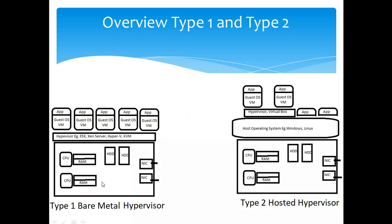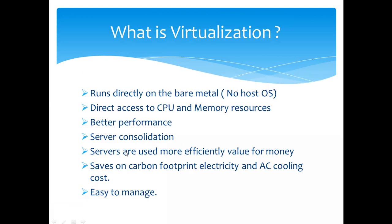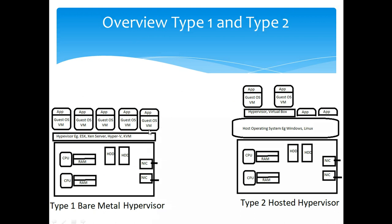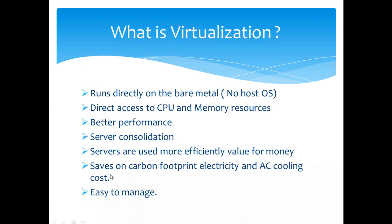Instead of running five physical servers, if you choose to virtualize them you are consolidating five physical servers into one. Servers are used more efficiently, giving better value for money. Because multiple OSes share the CPU and memory, you can utilize up to 80 or 90 percent, compared to buying an expensive physical server and barely getting over 50 percent CPU and memory utilization. This also saves on carbon footprint — you save electricity and energy bills because you are not running five physical servers.